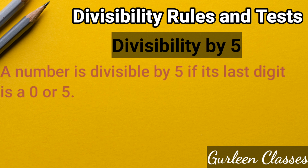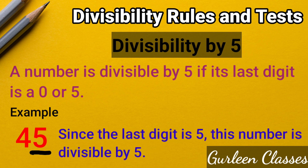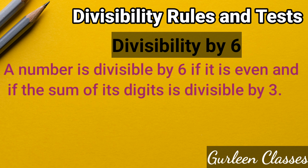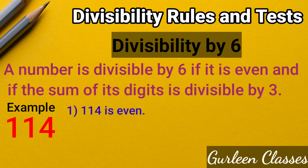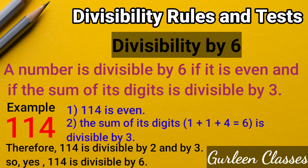Divisibility by 5: A number is divisible by 5 if its last digit is 0 or 5. Example: the number 45 — the last digit is 5, so this number is divisible by 5. Divisibility by 6: A number is divisible by 6 if it is even and the sum of its digits is divisible by 3. Example: 114. It is even, and 1 plus 1 plus 4 equals 6, which is divisible by 3. Therefore, 114 is divisible by both 2 and 3, so 114 is divisible by 6.